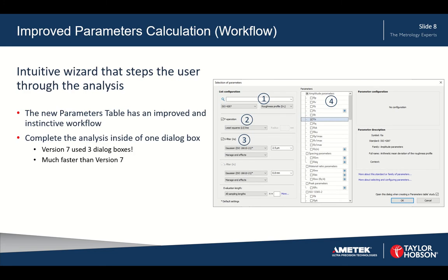We've also improved the parameter calculation. It's now one instinctive dialog box that takes you through the workflow of the calculation. The first step is to select your analysis type — be that roughness, primary, or waviness. We then go on to the form operation, select the filters, and finally select the parameters from the list. Comparing this to version 7, which uses three dialog boxes instead of one, version 8 is much faster and simpler to analyze your parameters.